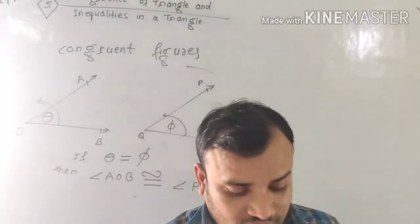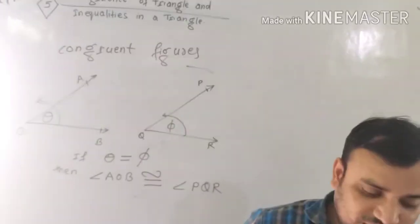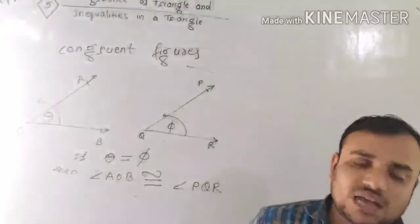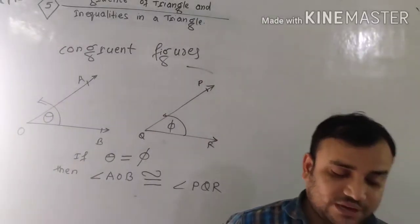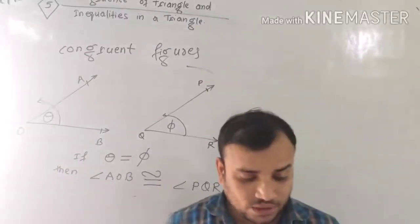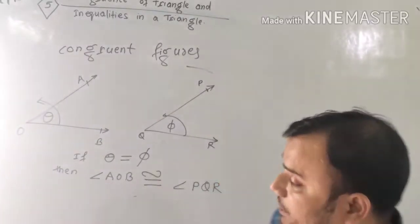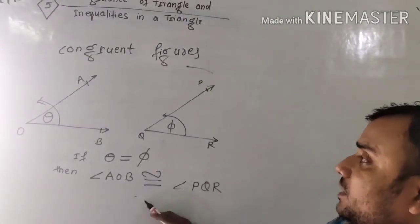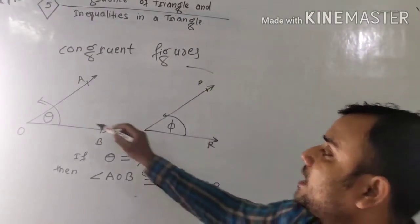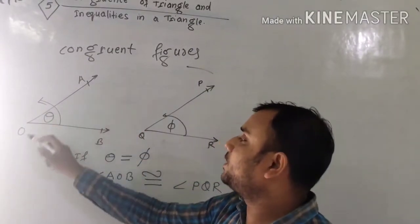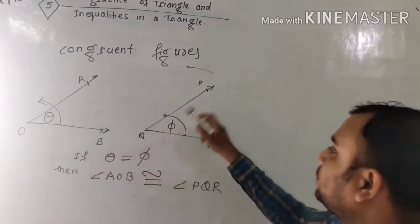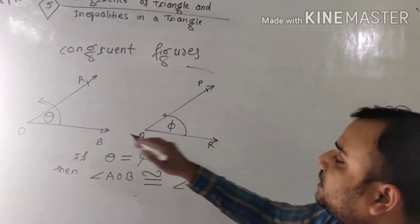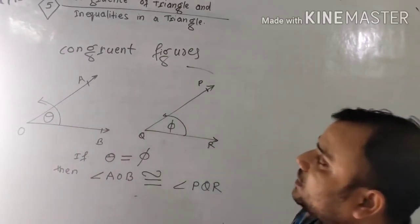Two geometrical figures having exactly the same shape and size are known as congruent figures. This is the sign of a congruent figure, and if angle AOB equals angle PQR, then their measurements are equal.